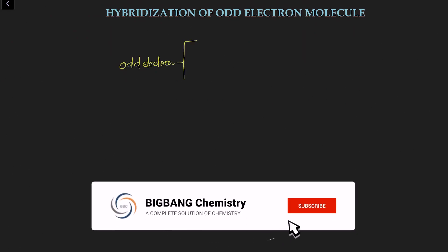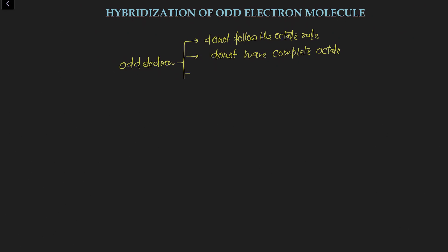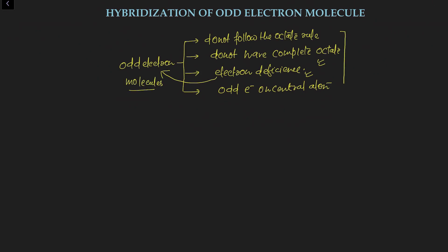First of all, we must know what an odd electron molecule or odd electron species is. The meaning of odd electron is very simple. The molecule or species which does not follow the octet rule, that is, does not have a complete octet, is generally considered electron deficient. An electron deficient molecule having one odd electron on the central atom is known as an odd electron molecule or species. In short, if the total number of valence electrons of a molecule is an odd number, then that molecule is your odd electron species.